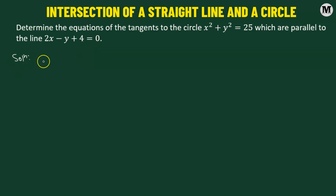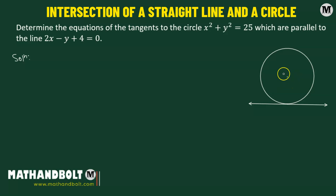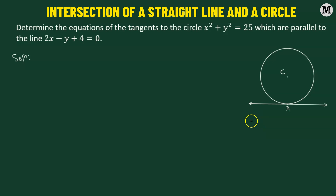So here we have a circle. The equation of the circle is given to us and we have another line which is tangent to the circle. The circle has the center c, and we have a line which is tangent to the circle at point A. Our goal will be to determine the equation of this tangent line. However, all we are given here is the equation of another line, and that line is perpendicular to the tangent line.